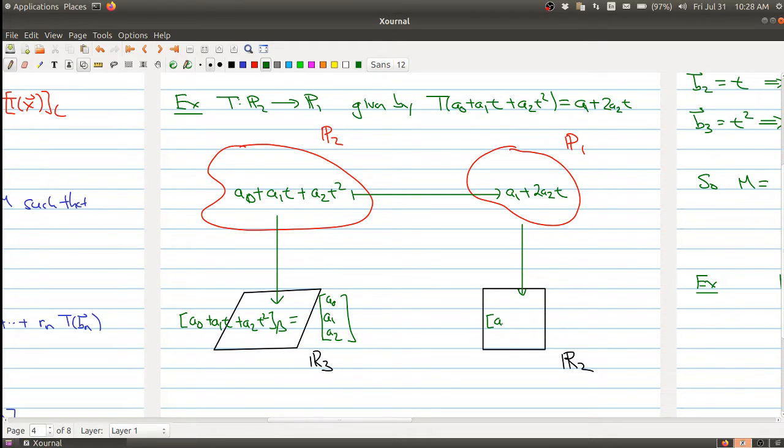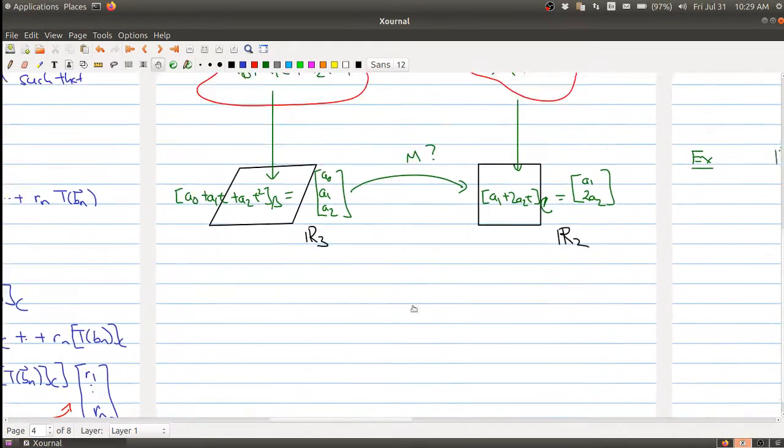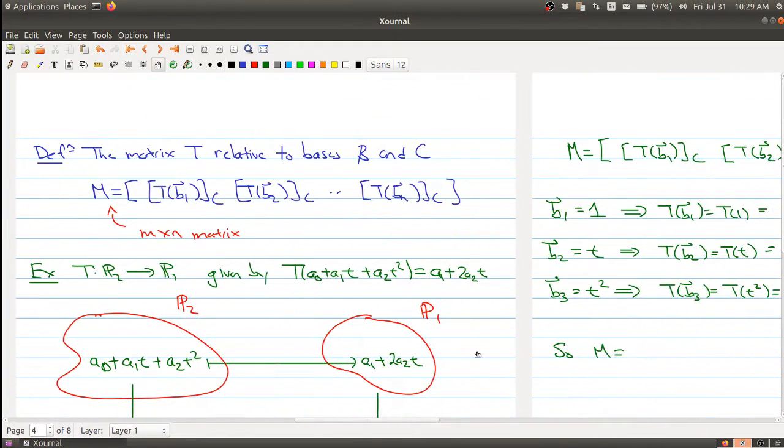So if we write this with respect to the basis for P1, you're going to get a vector of the form a1, 2*a2. So what we want to know is what is the matrix M that takes a vector of this form and maps it over to this vector in R².